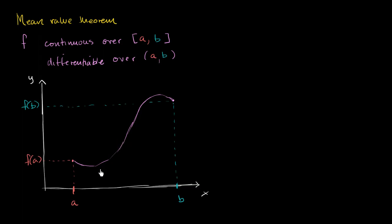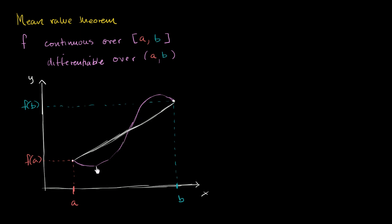Now what does that mean visually? Let's calculate the average change between point a and point b — that's going to be the slope of the secant line. All the mean value theorem tells us is that at some point in this interval, the slope of the tangent line is going to be the same as the slope of the secant line. And we can see visually that right over here the slope of the tangent line looks the same as the slope of the secant line — and also right over here. At some point, your instantaneous slope is going to be the same as the average slope.